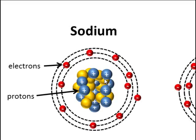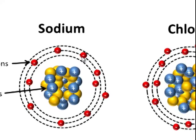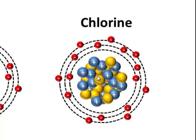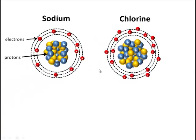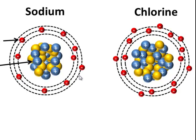Now sodium has 11 protons and 11 electrons, and chlorine has 17 protons and 17 electrons. But in a liquid, sodium tends to lose an electron on its outermost shell, and it will be taken up by chlorine, so it fills its outermost shell.